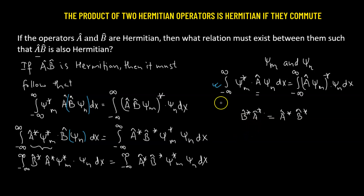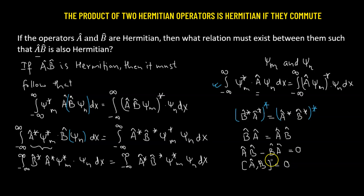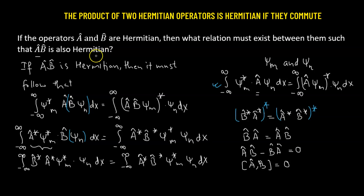Now we take the conjugate on both sides. Taking the conjugates gives us BA equals AB. Another way to write this: the operator AB minus the operator BA equals zero, or simply the commutator of A and B equals zero. This means A and B commute with each other. So the condition is that only when A and B commute with each other, and A and B are both Hermitian, will the product of the operators AB also be Hermitian.